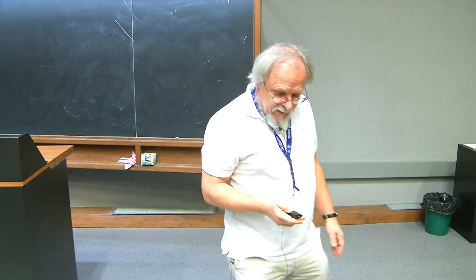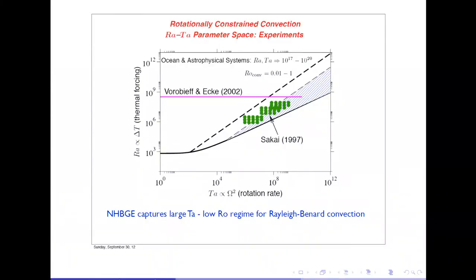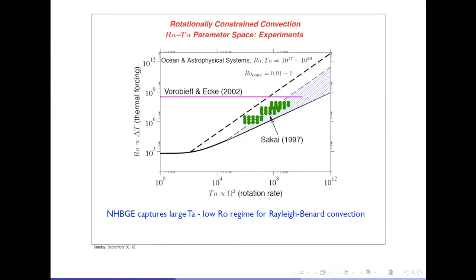What is it that I really want to do? This is the basic parameter space for this kind of rotating convection problem — the buoyancy-driven flow. On the horizontal axis, I have a measure of the rotation rate, the Taylor number. On the vertical axis, I have the forcing of the flow measured by the Rayleigh number or the temperature difference applied across the system.